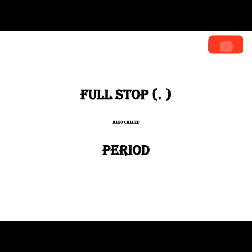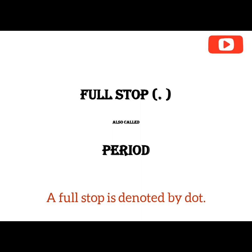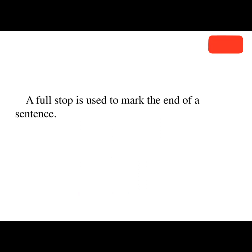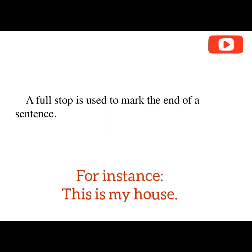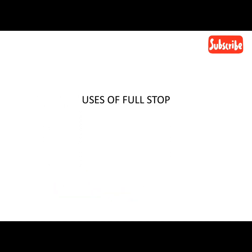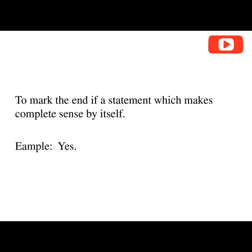The full stop is used to mark the end of a sentence. For instance, 'This is my house.' We put a full stop to show that's the end of the sentence. Another use of the full stop is to mark the end of a statement which makes complete sense by itself. Example: 'Yes.' Put a full stop.